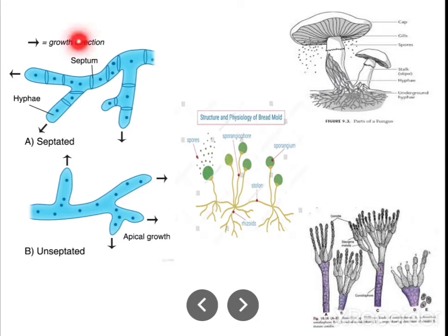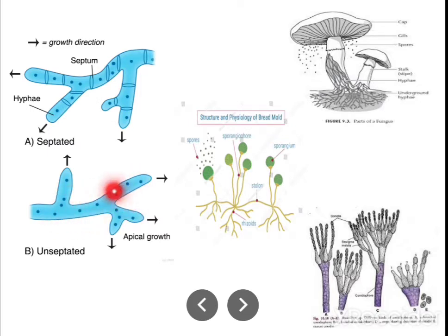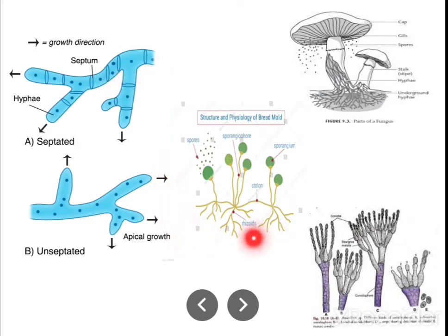Septate fungi have septum divisions between cells, while aseptate fungi have no septum division. Within a single cell you can observe two nuclei — this type of condition is called the dikaryotic condition. Examples shown here include bread mold, penicillium, and a typical mushroom.